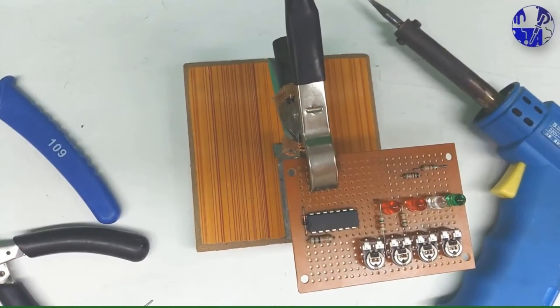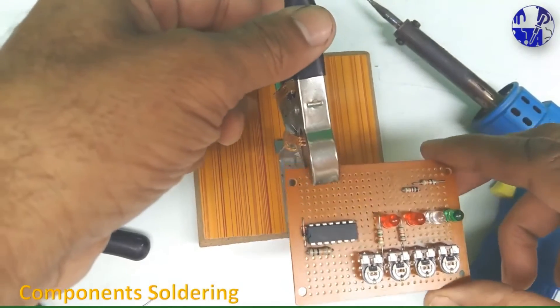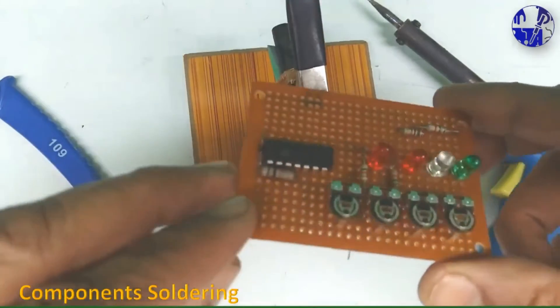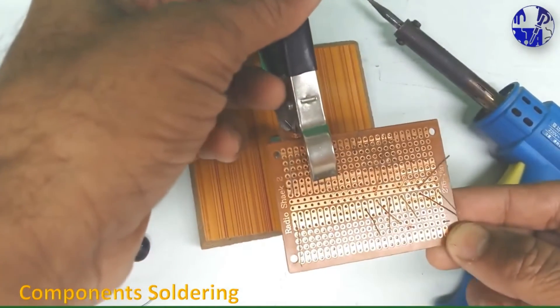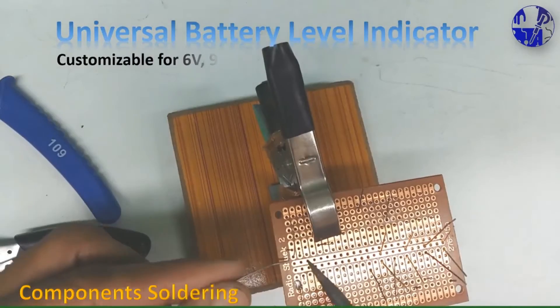After installing all the components on the Vero board, it's time to begin soldering them. Utilize this universal battery level indicator circuit for different types of batteries such as 6V, 9V, 12V, and 24V.